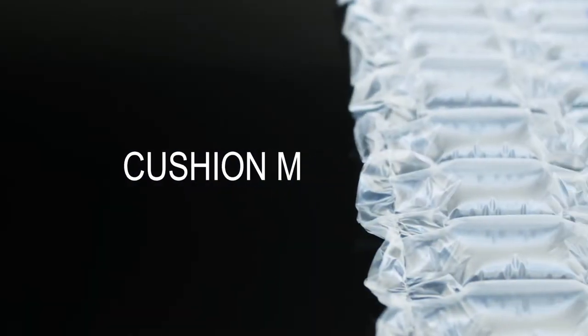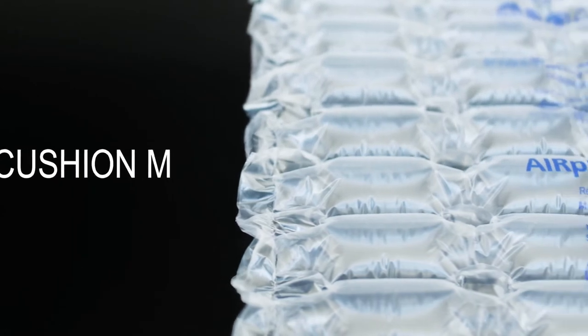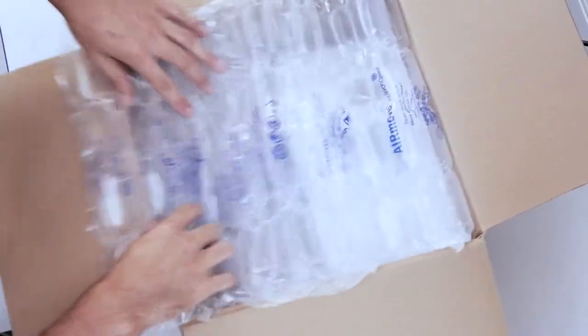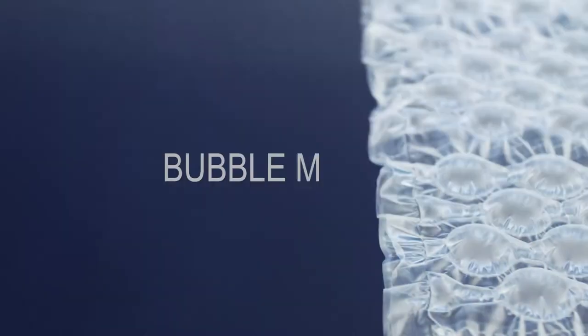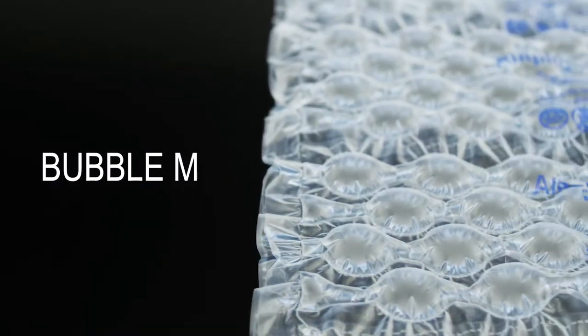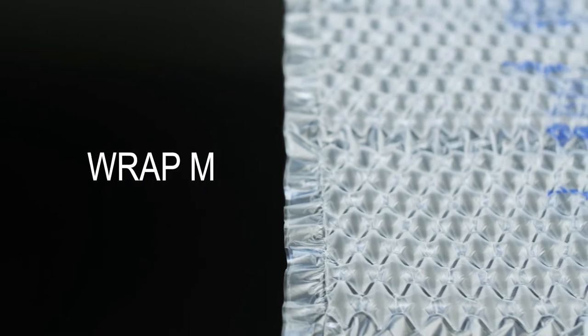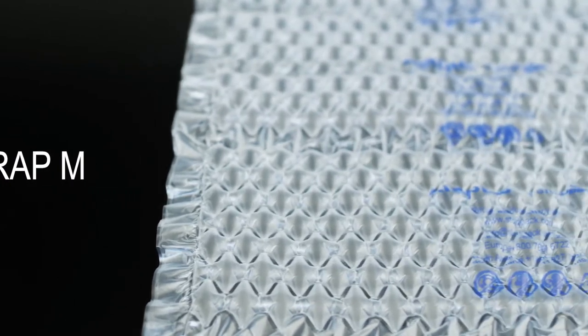Cushion film is used for cushioning larger or delicate items. Bubble film is ideal for wrapping fragile items. The wrapped film can also be used for tight wrapping of fragile items.